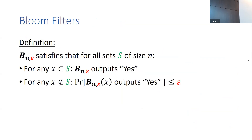The small memory used by bloom filters, as opposed to storing S precisely, along with their fast query time makes them extremely useful in various areas. But this comes at the price of a certain rate of false positives — elements that do not belong to the set S but are declared as being in the set. We say that a bloom filter is (n, ε) if for every set of size n, querying an element from the set must output yes, while querying an element not in S is allowed to answer yes with small error probability ε.